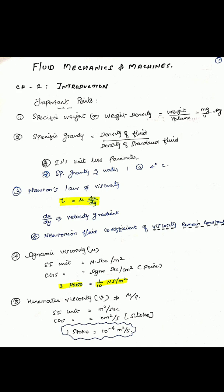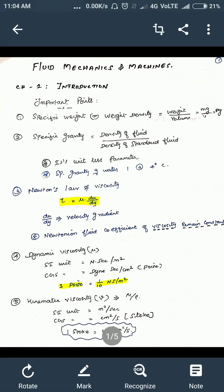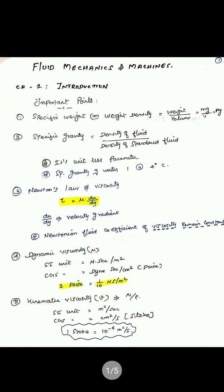Here we discuss some important formulas and points in this chapter. First, specific weight or weight density — it is the weight per volume. Specific gravity is the density of fluid divided by density of standard fluid; it is a unitless parameter. The specific gravity of water is 1 at 4 degrees Celsius.